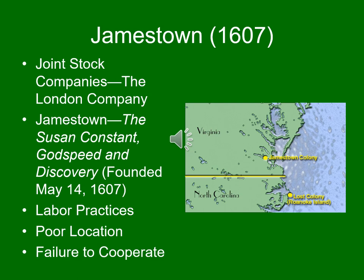The location of Jamestown is not ideal. It's on a marshy peninsula jutting out into the James River, with issues of salt in the drinking water, yellow fever, and other diseases. From the very beginning, colonists began dropping like flies.